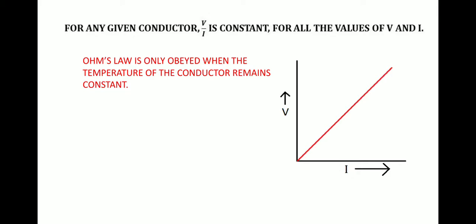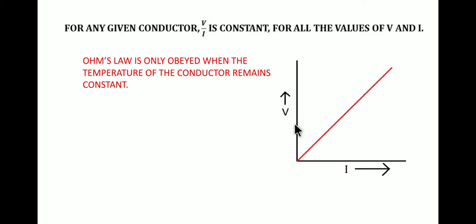Here is a graph which shows the increase in current I on the x-axis and the increase in voltage on the y-axis. As the current increases, the voltage also needs to increase — that is, the potential difference also increases. At any point on this graph, the increase in current and the increase in potential difference happen in a similar manner, keeping their ratio constant.